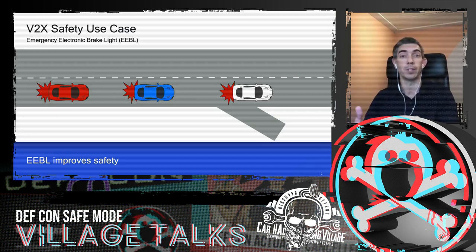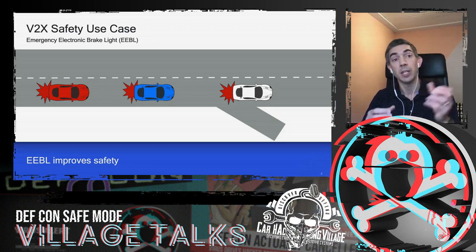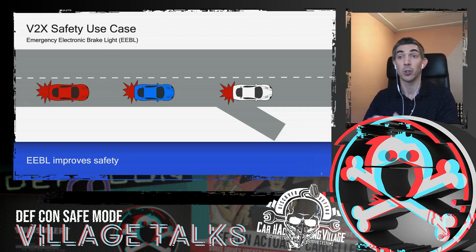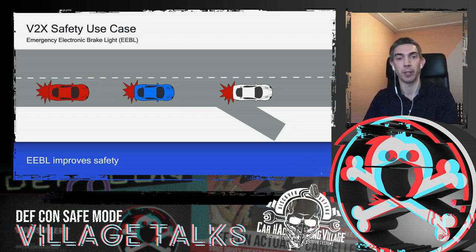We see the huge safety benefit in this V2V use case. This is an Emergency Electronic Brake Light (EEBL) application that consumes BSMs sent by other vehicles to understand that an emergency brake is happening. There are many safety and efficiency applications designed for V2X.